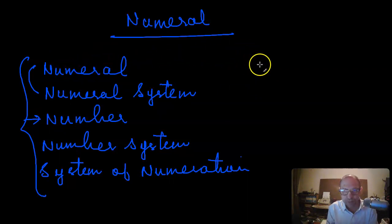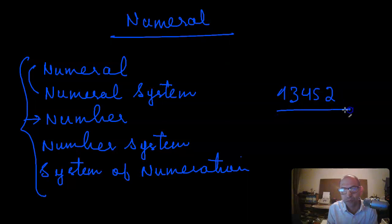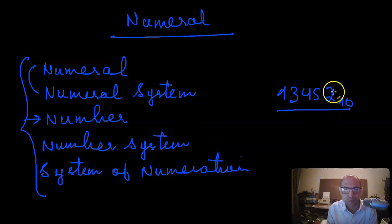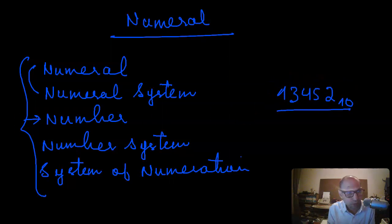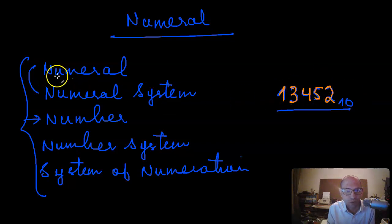For example, when you write a number like 13,452, that number is in the decimal number system — meaning the base of the number is base 10. In order to write this number, you need these different digits: you need a 2, a 5, a 4, a 3, and a 1. These individual digits are called the numerals, and the whole system that contains these numerals is called the numeral system.